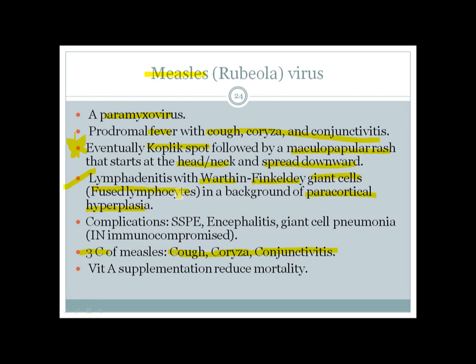Paramyxoviruses have a fusion protein (F protein), which causes fusion of multiple cells. RSV causes syncytia formation in the lungs; measles causes Warthin-Finkeldey giant cells by fusion of lymphocytes. Three important complications of measles are: acute encephalitis, giant cell pneumonia (especially in immunocompromised patients), and after years, subacute sclerosing panencephalitis (SSPE). Measles is also associated with reduced Vitamin A levels, so Vitamin A supplementation reduces mortality in affected children.